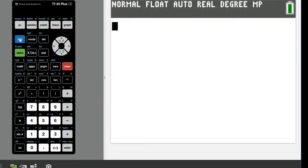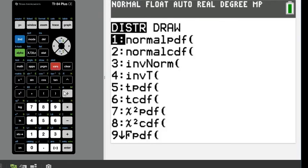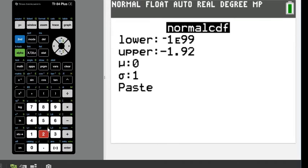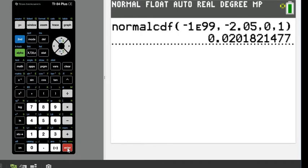So let's grab our calculator. What we're going to do is we're just going to go to 2nd, Distributions, Normal CDF, which is Option 2. The lower, anytime it's to the left, the lower limit is going to be negative 1 E99. And then we would plug in our Z score, which is negative 2.05. Make sure that you hit the negative button here and not the subtraction button, because if you hit subtraction, you're going to get an error.